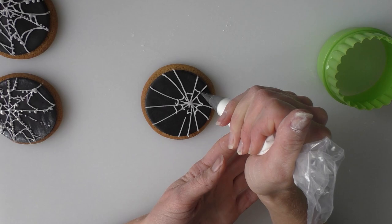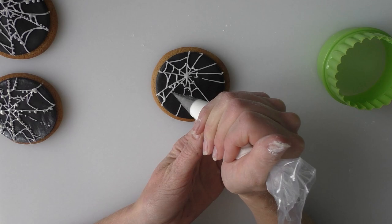So once you've got as many lines on as you want, I'm going to start adding lines across. So between each of the lines. If you miss the odd one out, that's fine.